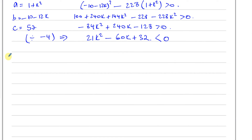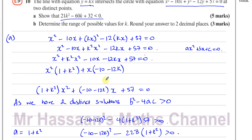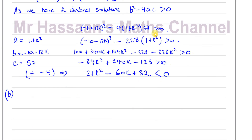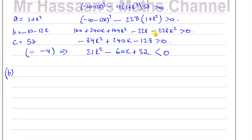Part B asks us to determine the range of possible values of k, rounded to two decimal places. That means we need to solve the inequality 21k² - 60k + 32 < 0. First, let's find the values of k where 21k² - 60k + 32 = 0, then determine when it's less than 0.